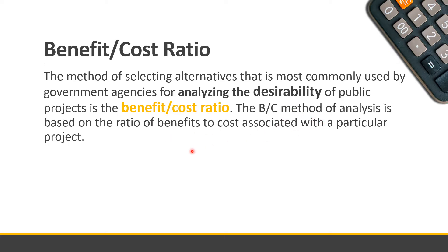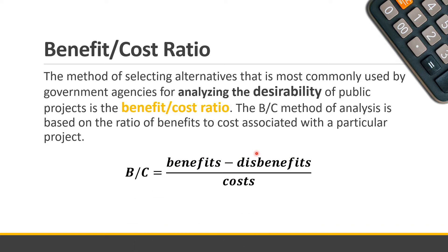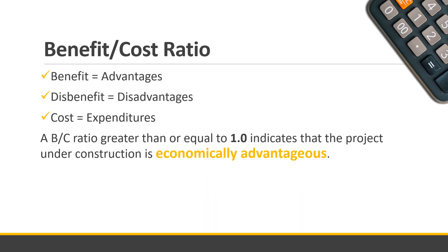The BC method of analysis is based on the ratio of benefits to cost associated with a particular project. Benefit-cost ratio is represented by the formula: benefits minus disbenefits over the total cost. Here, 'benefit' means the advantages of a certain project, 'disbenefit' means the disadvantages of the certain project, and 'cost' is the expenditures used for construction or maintenance.